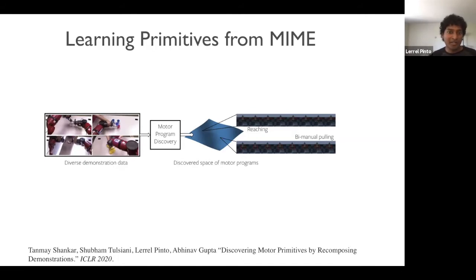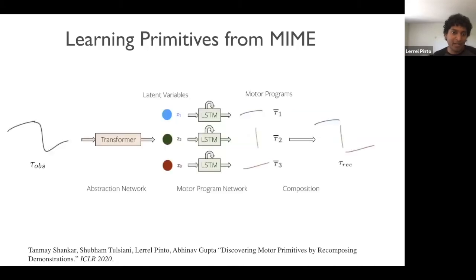So how do we go about doing this from a MIME dataset? We have an architecture of this sort, where the input on the left is a trajectory from the dataset, which goes through an abstraction network, which is effectively a transformer that extracts latent variables. Now these latent variables correspond to a motor program. This motor program is in some sense a primitive of motion. Then these motor programs can then be composed into the trajectory itself. Now by having a loss on the input, which is on the left, and the reconstructed output, we can now have a loss that can train all the weights in this architecture.